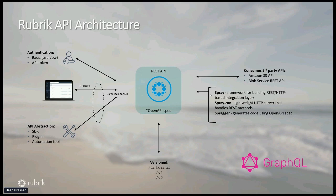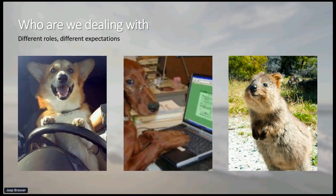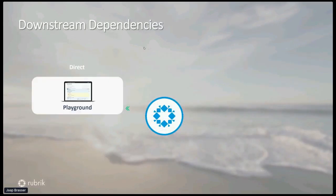We have a couple of different users of our product, and because of that also different types of people touching our APIs. We have end users on the left who are just happy to get to where they need to go. We have developers who are very familiar with API calls and are happy to consume API documentation to write their own software or integrations. And on the right, the quokka is happy as long as there are checkboxes for all the capabilities.